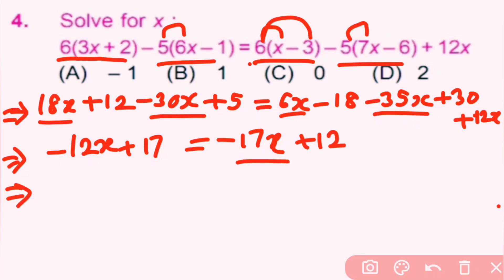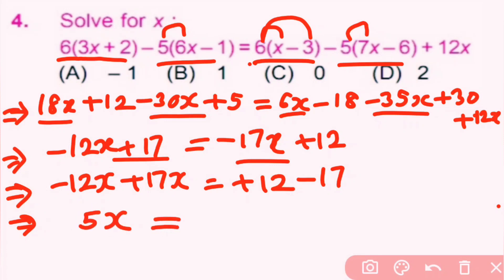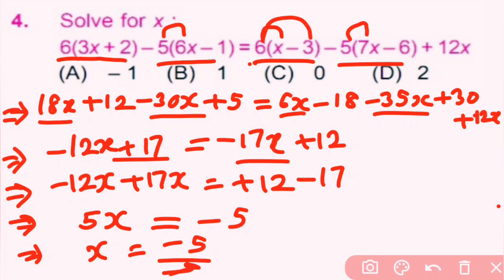Taking minus 12x to this side and 17 to the other side: minus 12x plus 17x equals 12 minus 17. So 5x equals minus 5, and x equals minus 5 by 5, which gives x equals minus 1. Answer a is correct.